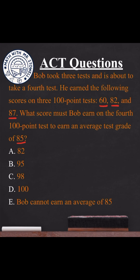What we're going to do is add up all the points to find the average. So we have 60 plus 82 plus 87, add that to x, divide by 4 since we have four tests. That should equal 85.